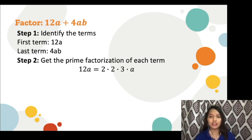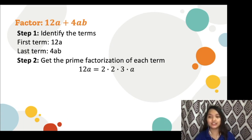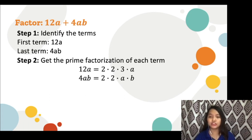For 12a, its prime factorization is 2 times 2 times 3 times a. Let's double check: 2 times 2 is 4, times 3 is 12, and 12 times a is 12a. For 4ab, it is equal to 2 times 2 times a times b. Let's double check: 2 times 2 is 4, times a is 4a, and 4a times b is 4ab. That is correct.